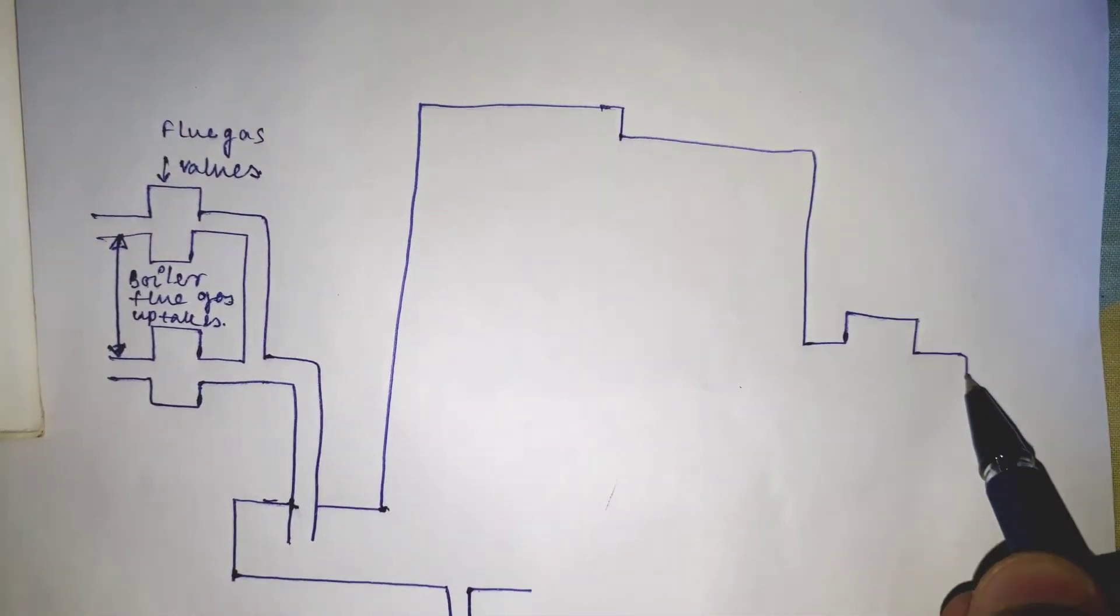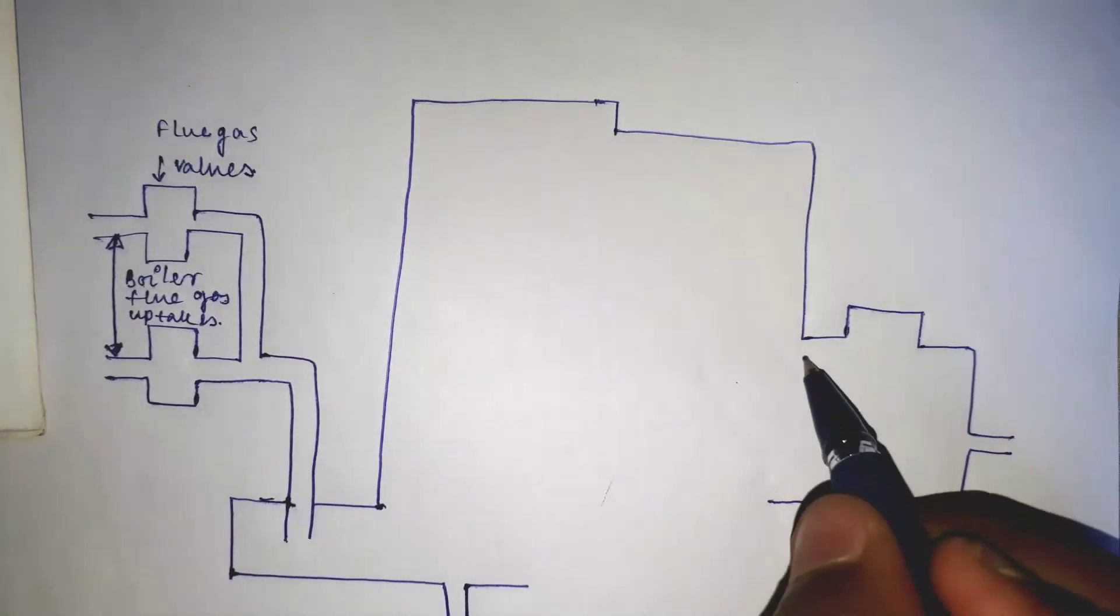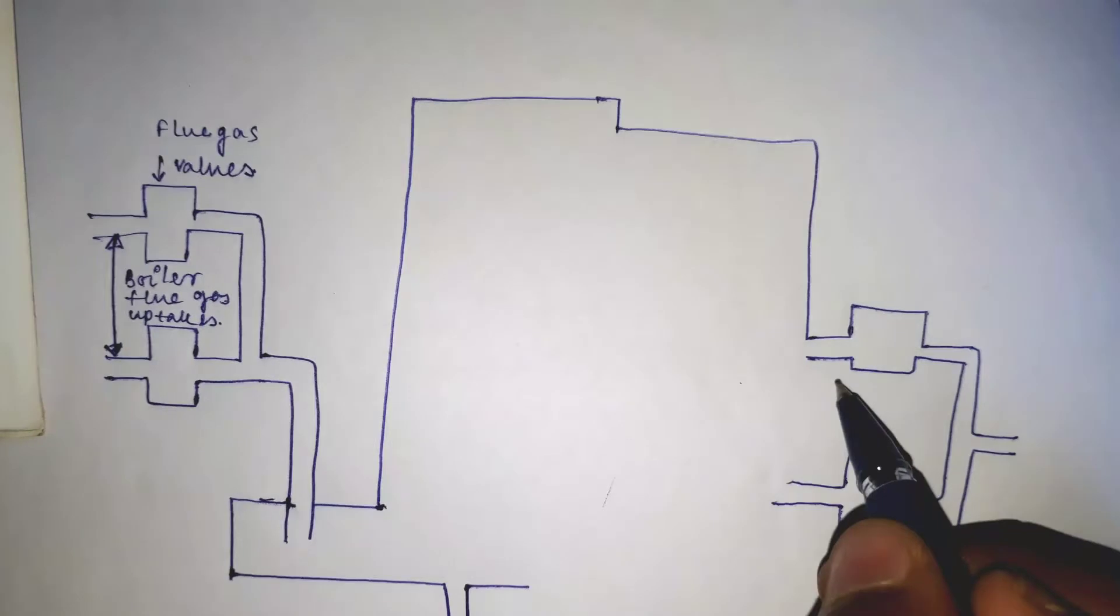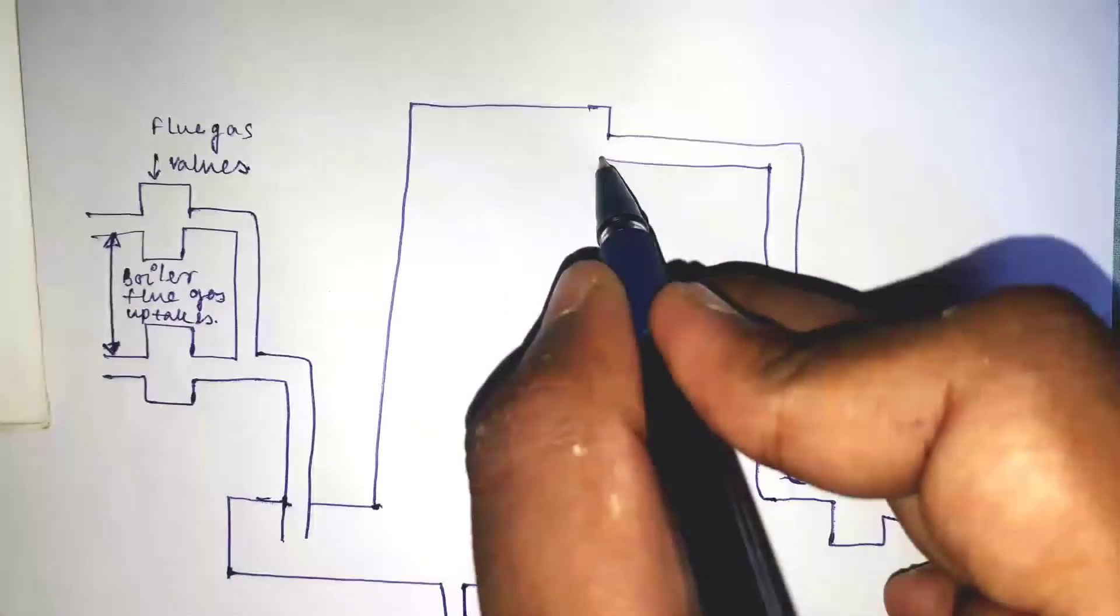Now we will see the components of inert gas plant. As drawn in the figure you can see, inert gas source. What is the inert gas source? The boilers in the ship's engine room are the source for the funnel gas used in the inert gas process.